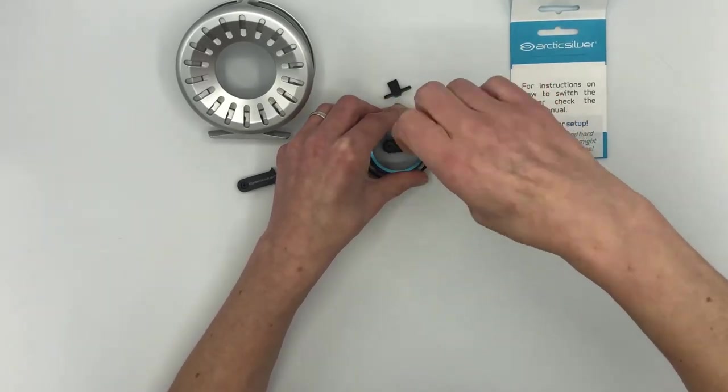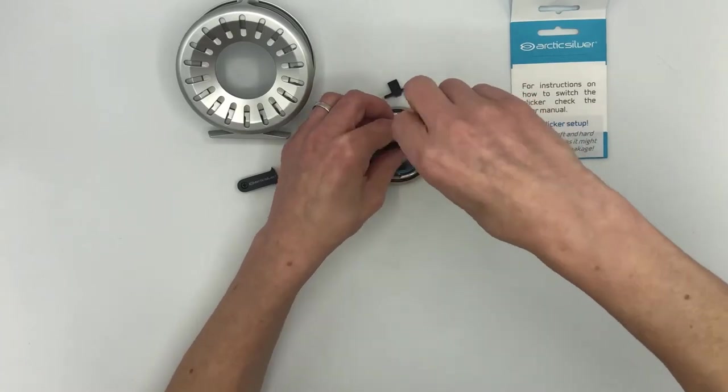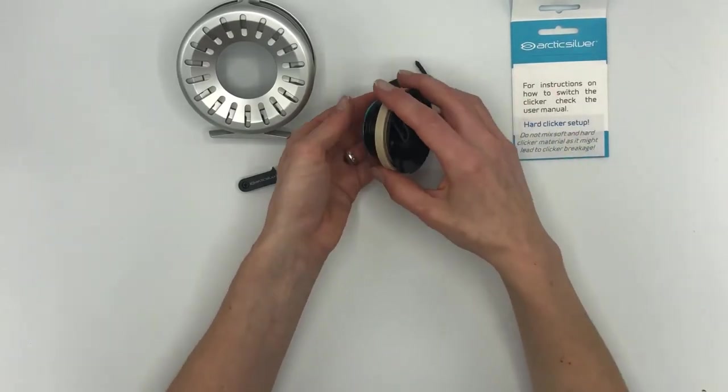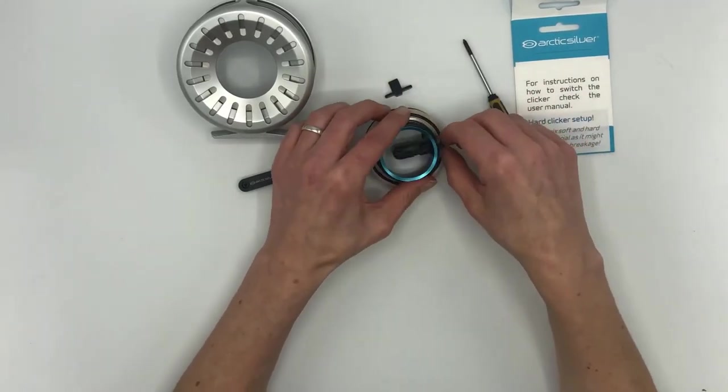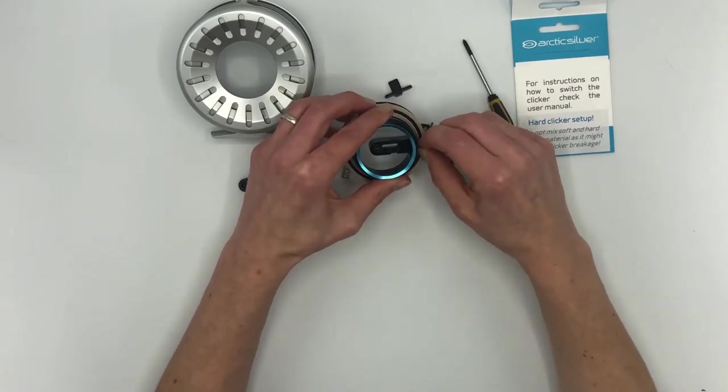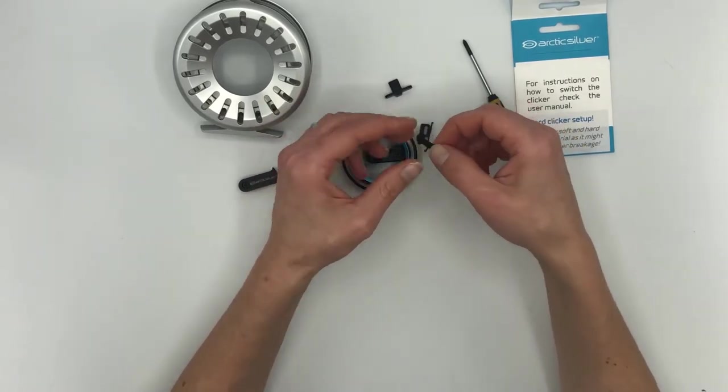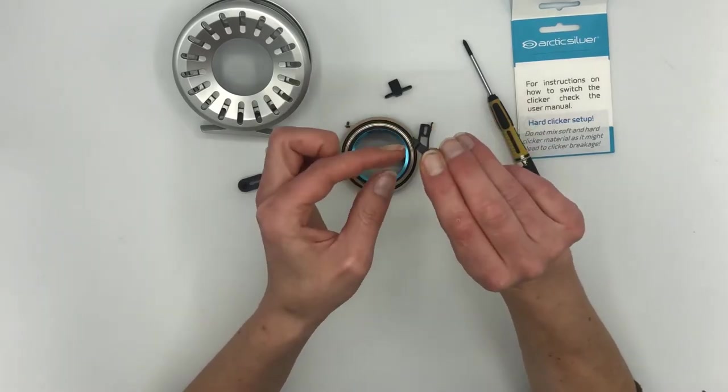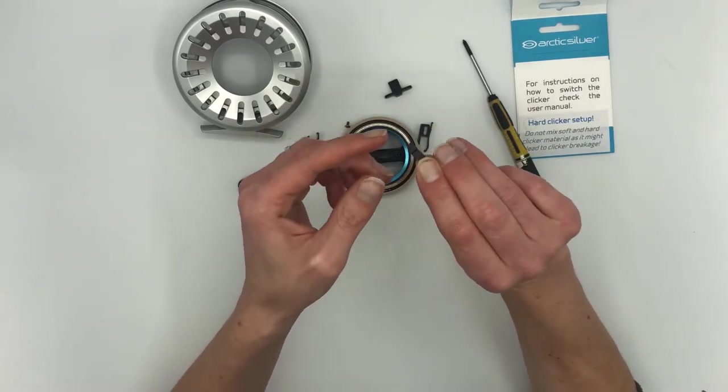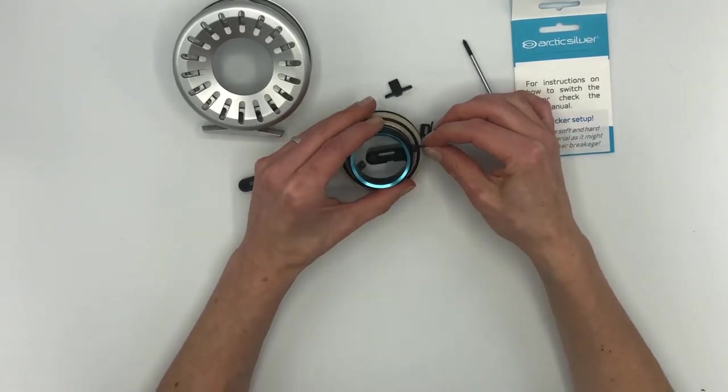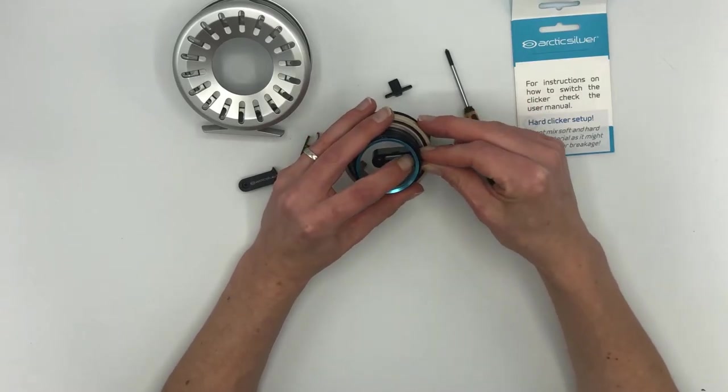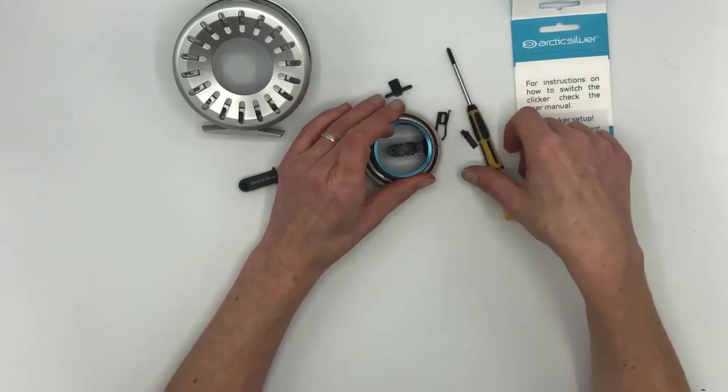The clicker is released by just lifting it up here a little bit and then take it out because it has a small cut right here so you can easily set it in. I'm not going to change it to hard clicker setup now because I like the soft clicker setup best.